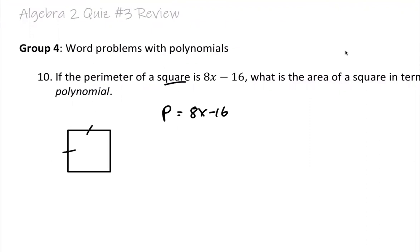Perimeter is when you have all these four sides added up together, right? So that means each side, let's call it s, four of these sides would be 8x minus 16.